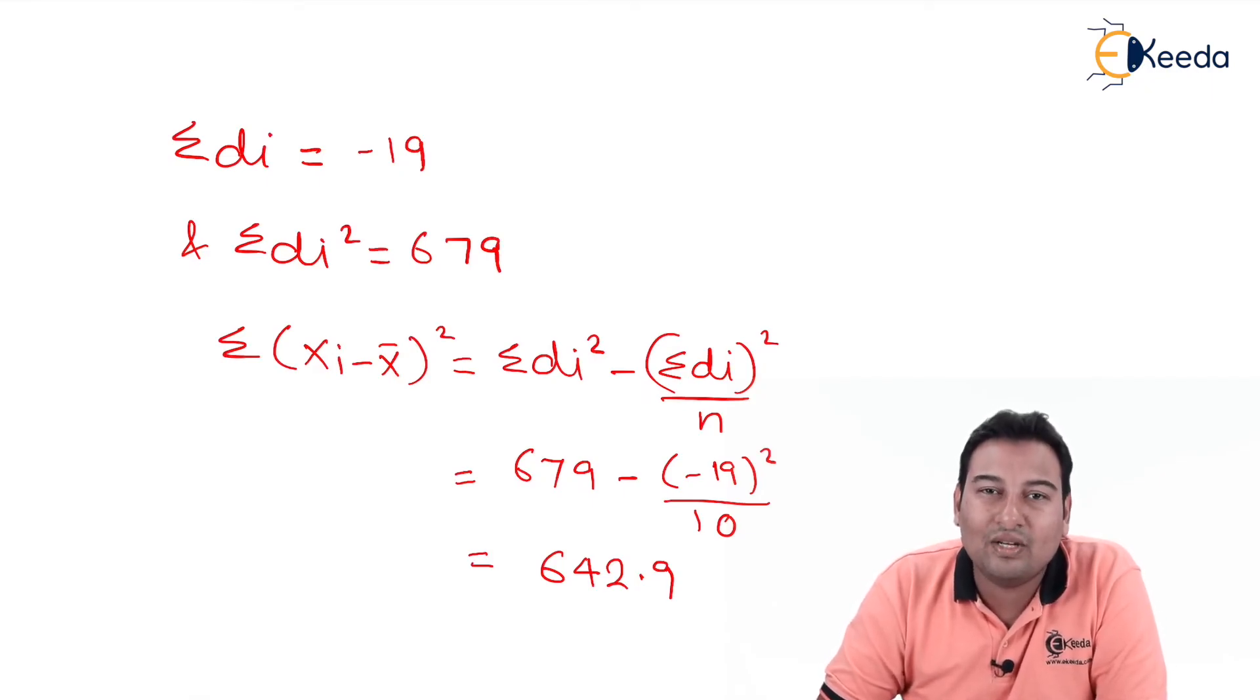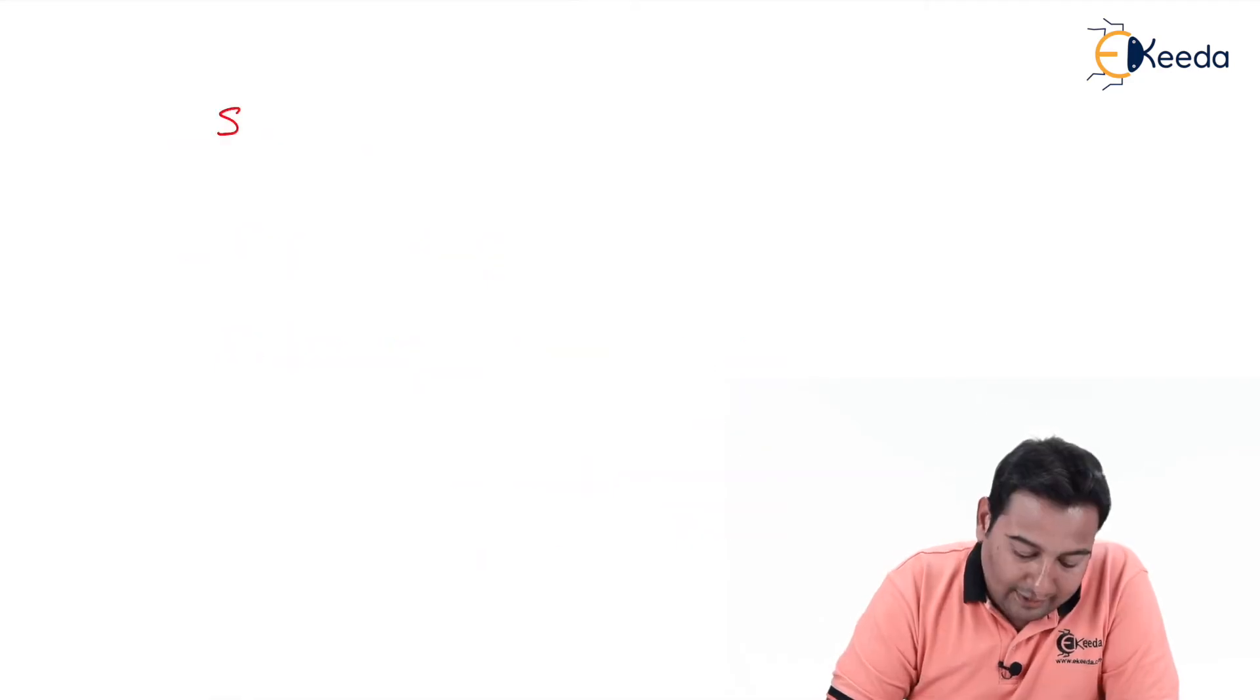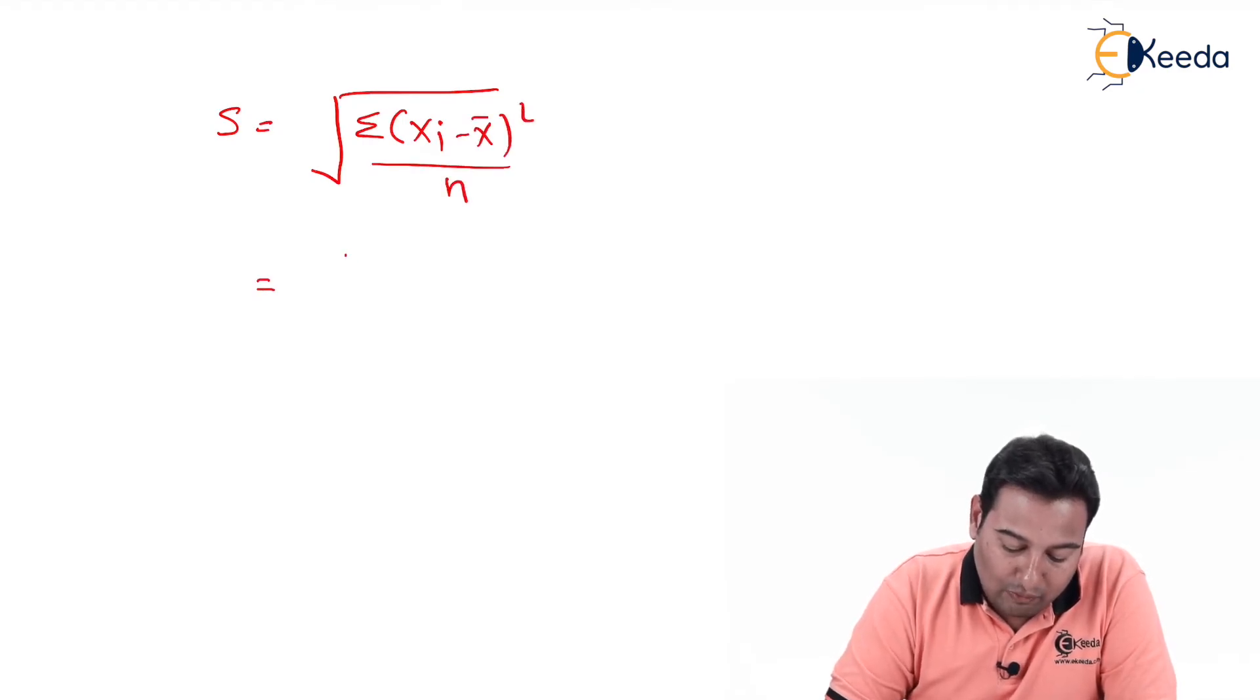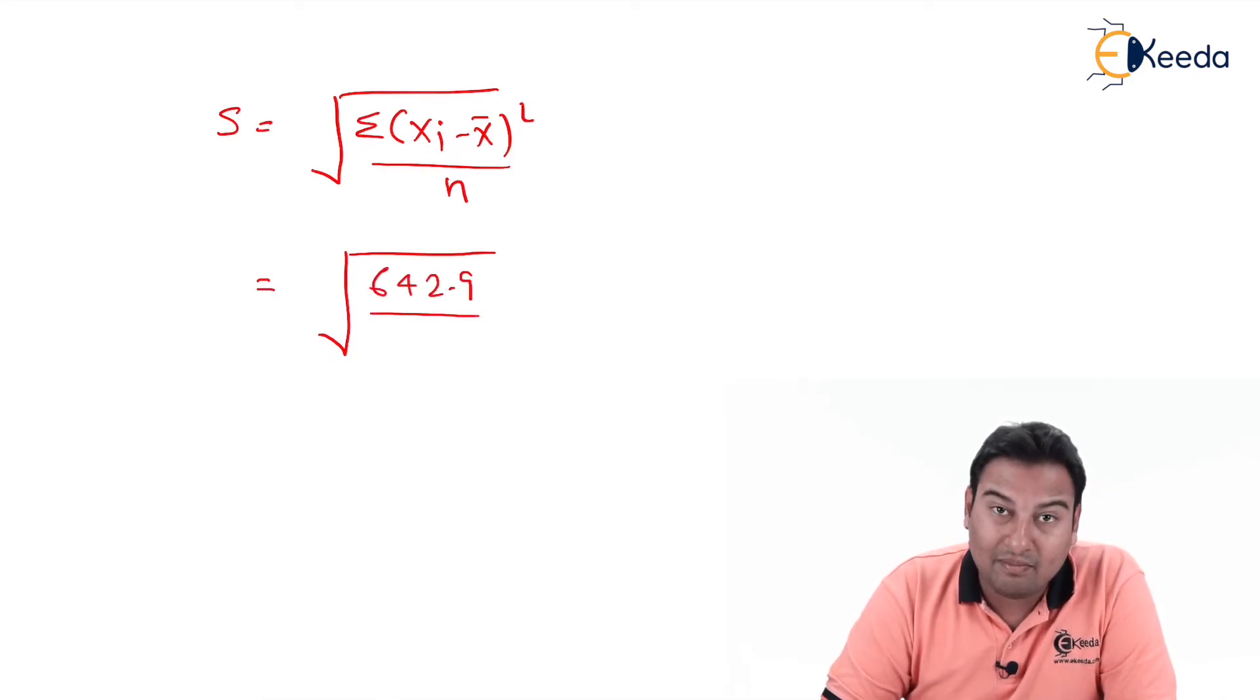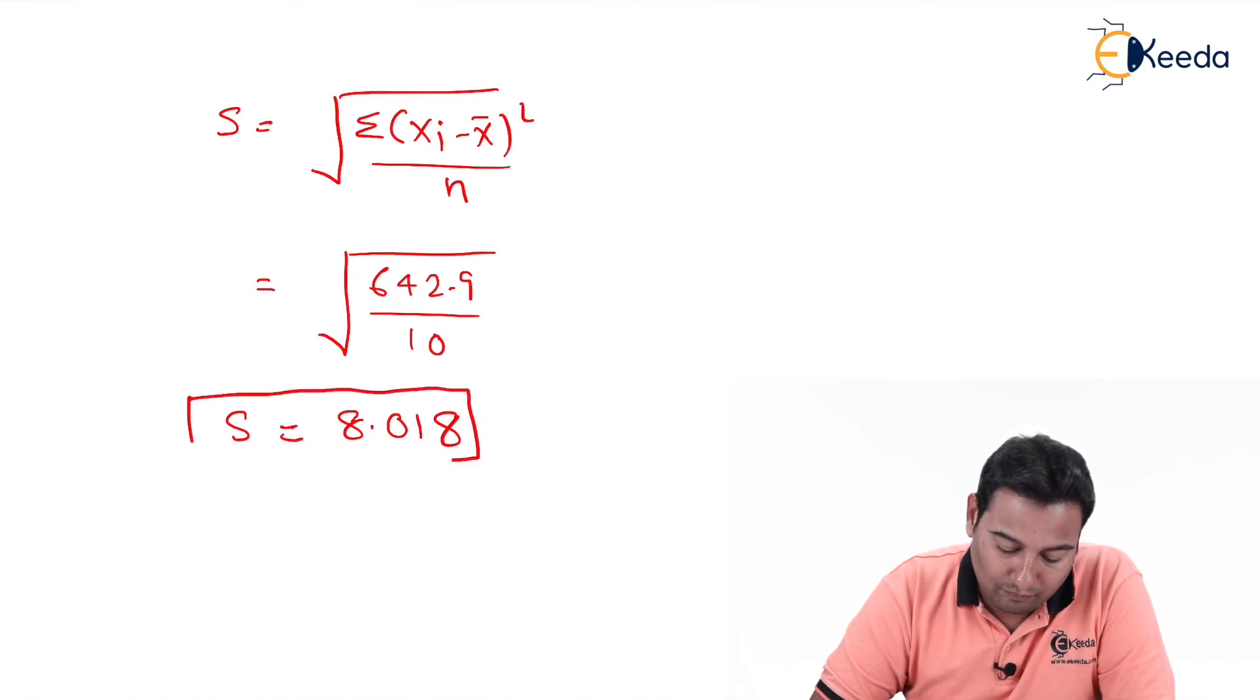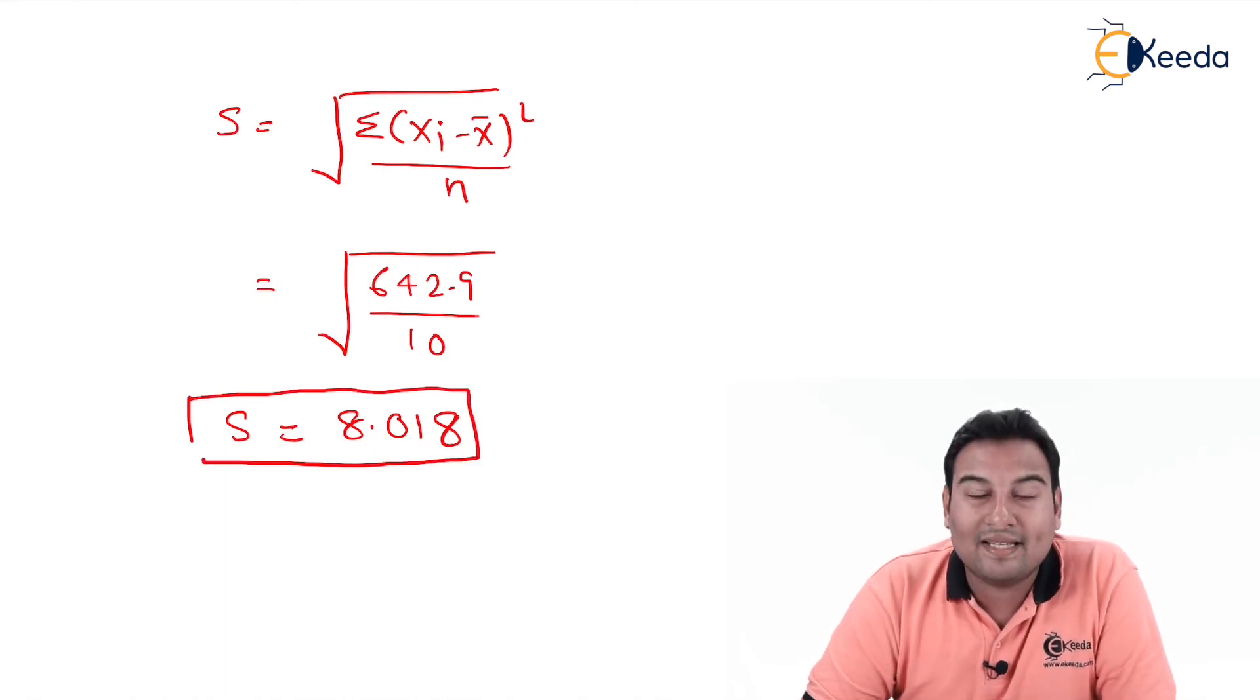Now let us find the value of s. s is root of summation of (xi minus x̄)² upon n, which is equal to root of 642.9 upon n, n means 10. This is equal to 8.018. This is the value of s.